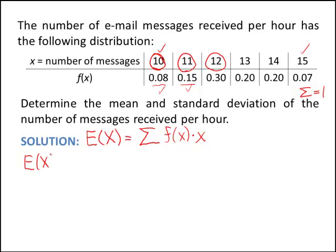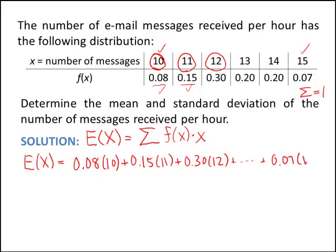Expected value of x is 0.08 times 10 plus 0.15 times 11 plus 0.30 times 12. I'm going to continue this pattern all the way to the last value, 0.07 times 15.